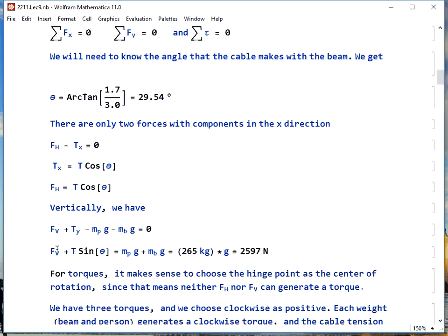If we put in what we know here, we can write that vertical force plus T sine theta, they have to support the weight of both the person and the beam, and that total weight is 2,597 newtons.